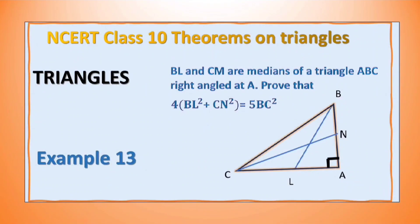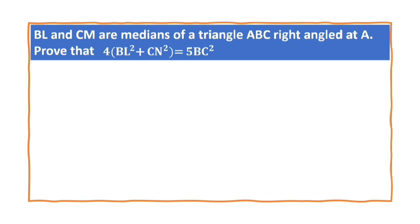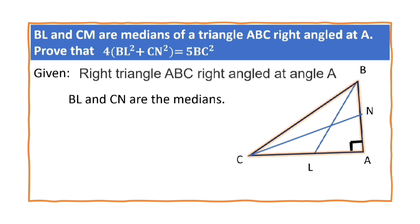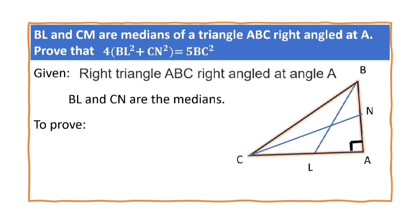In this video, let us solve example 13 of the chapter Triangles. The question is: BL and CM are the medians of the triangle ABC right angled at A. Prove that 4 into BL square plus CN square is equal to 5BC square. What is given? A right angled triangle ABC right angled at angle A, and BL and CM are the medians. This means L is the midpoint of AC and N is the midpoint of AB. What is to prove? 4 into BL square plus CN square is equal to 5BC square.